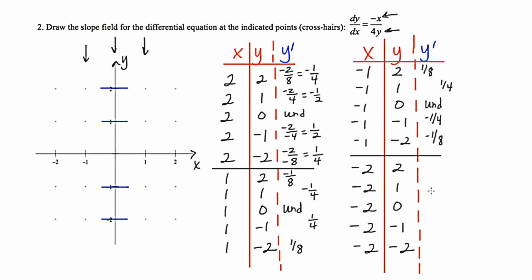We're almost done. I know this is a bit tedious, but these questions are always on the AP exam and you've got to learn how to cope with it. For our last cluster with x=-2: 2 over 8 is 1 fourth; 2 over 4 is 1 half; 2 over 0 is undefined; 2 over negative 4 is negative 1 half; and 2 over negative 8 is negative 1 fourth.